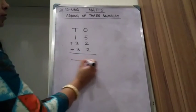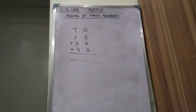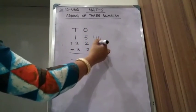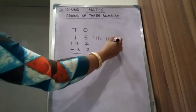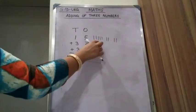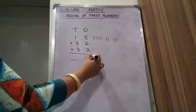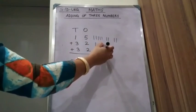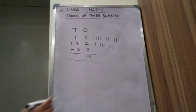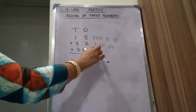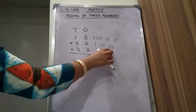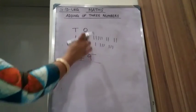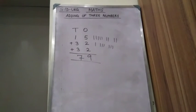See the ones column: 5, 2, 2. Count: 5, 6, 7, 8, 9. Write 9 here. Now see the tens column: 1, 1, 3, 1, 2, 3. Count all together: 1, 2, 3, 4, 5, 6, 7. Write 7 here. 7 tens, 9 ones — 79 is the answer.